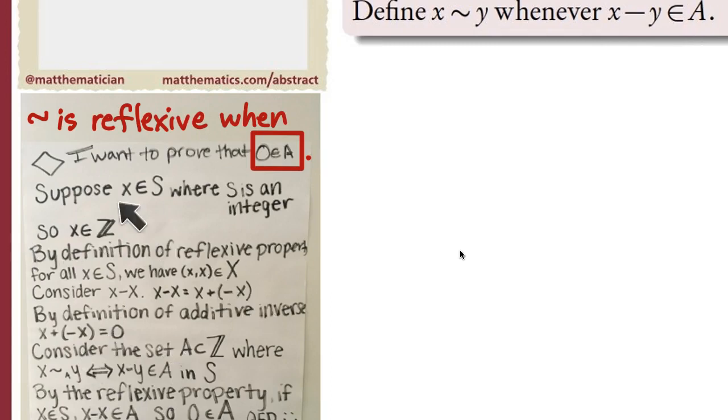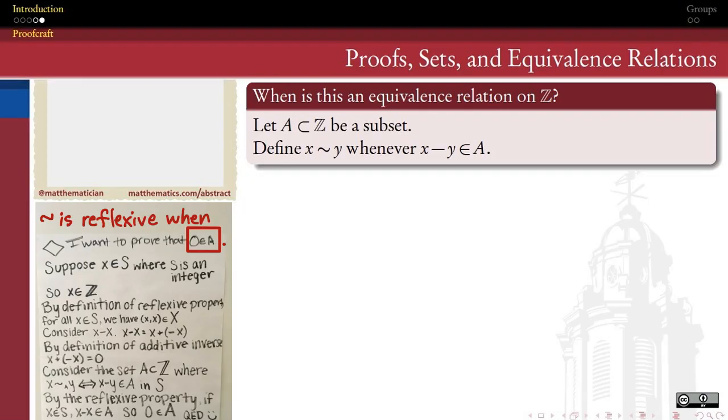So this group added some additional language in here about additive inverses and so on, but really the main point of their proof was that in order to have x related to itself, we need to have the difference x minus x be an element of A. That's after all the definition of this relation. But the difference of x and x is 0. So in order that this be a reflexive relation, 0 needs to belong to the subset A. That settles the question about reflexive.